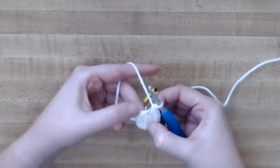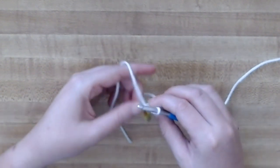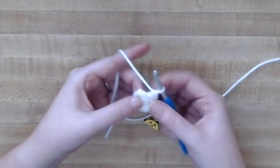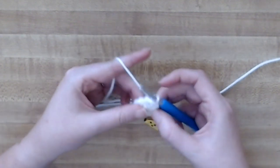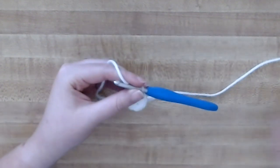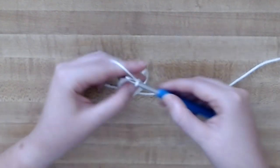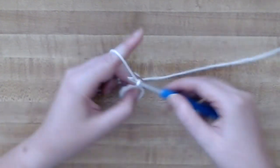Now this next round is where we're going to be starting the points. Slip stitch into the next stitch just to make it a flat circle, and then from there you're going to chain four. In the second chain from the hook, slip stitch.